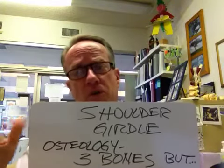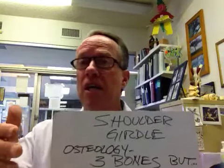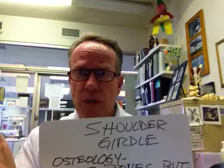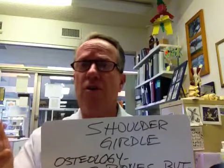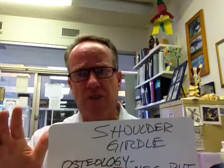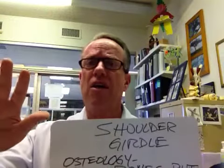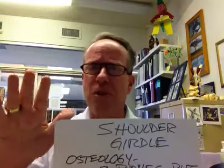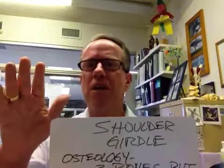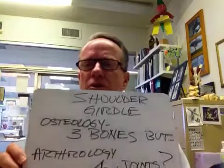Three bones but lots to know about those bones. Then in arthrology, you ask: are there three joints or four? There are three synovial joints. But you have to ask yourself — is the scapulothoracic union really a joint? Well, it's not a traditional joint, but it operates similarly to one.